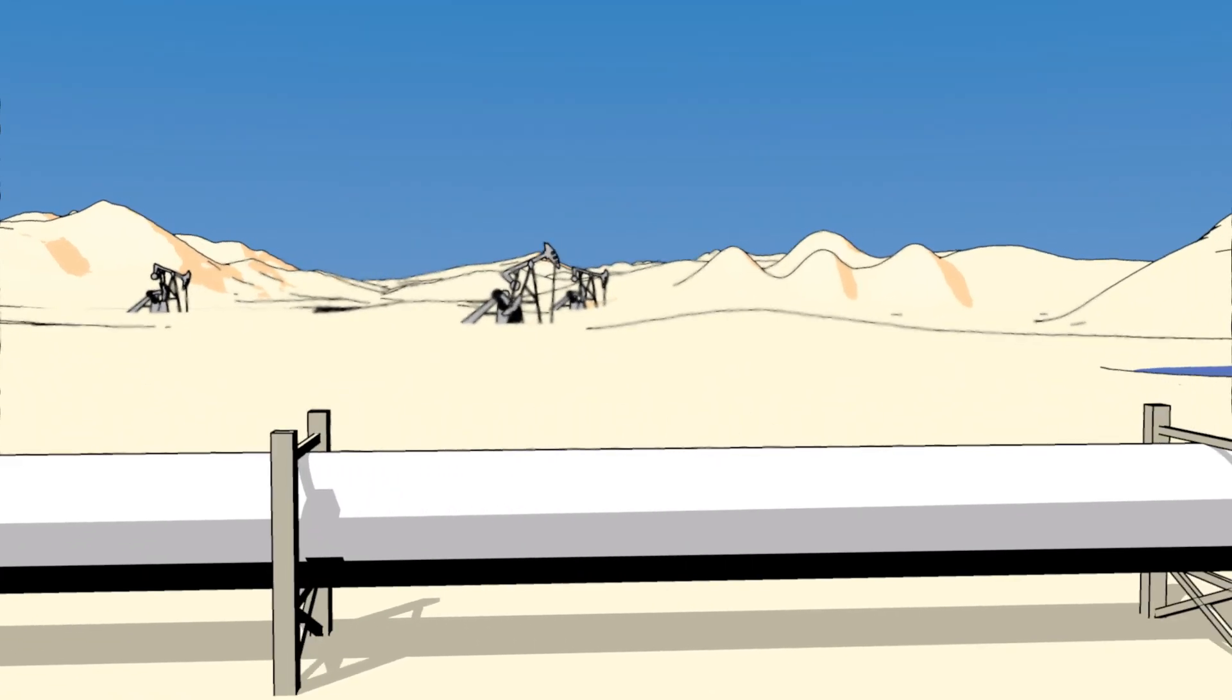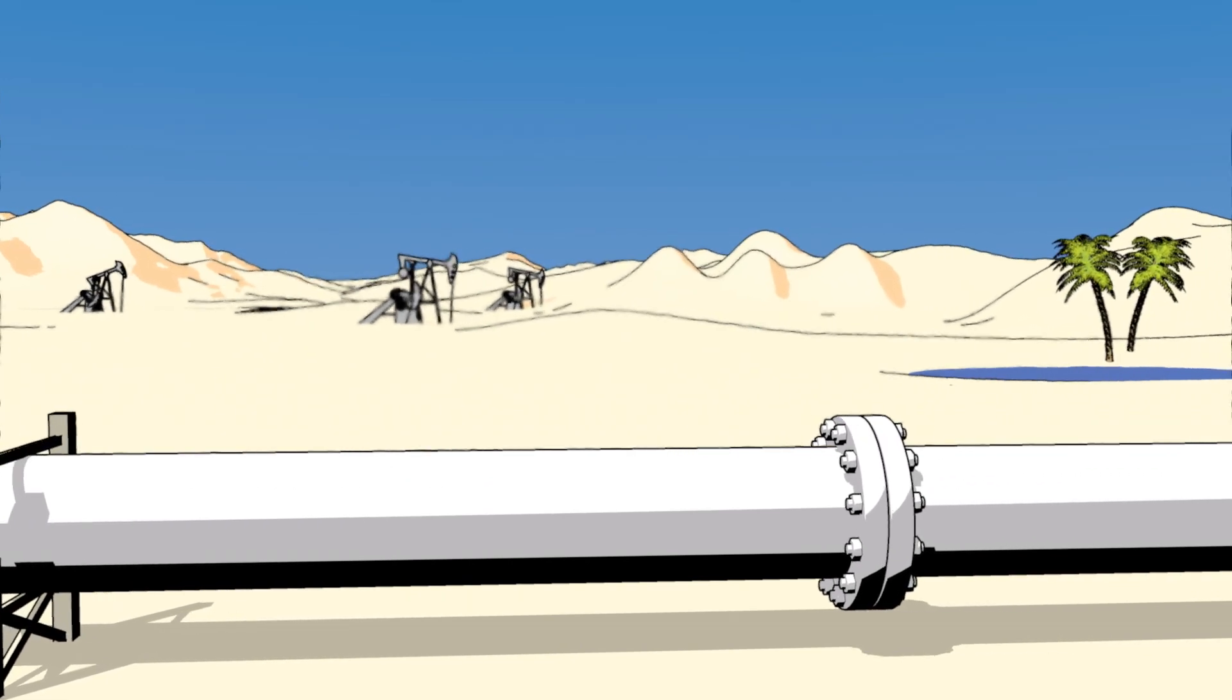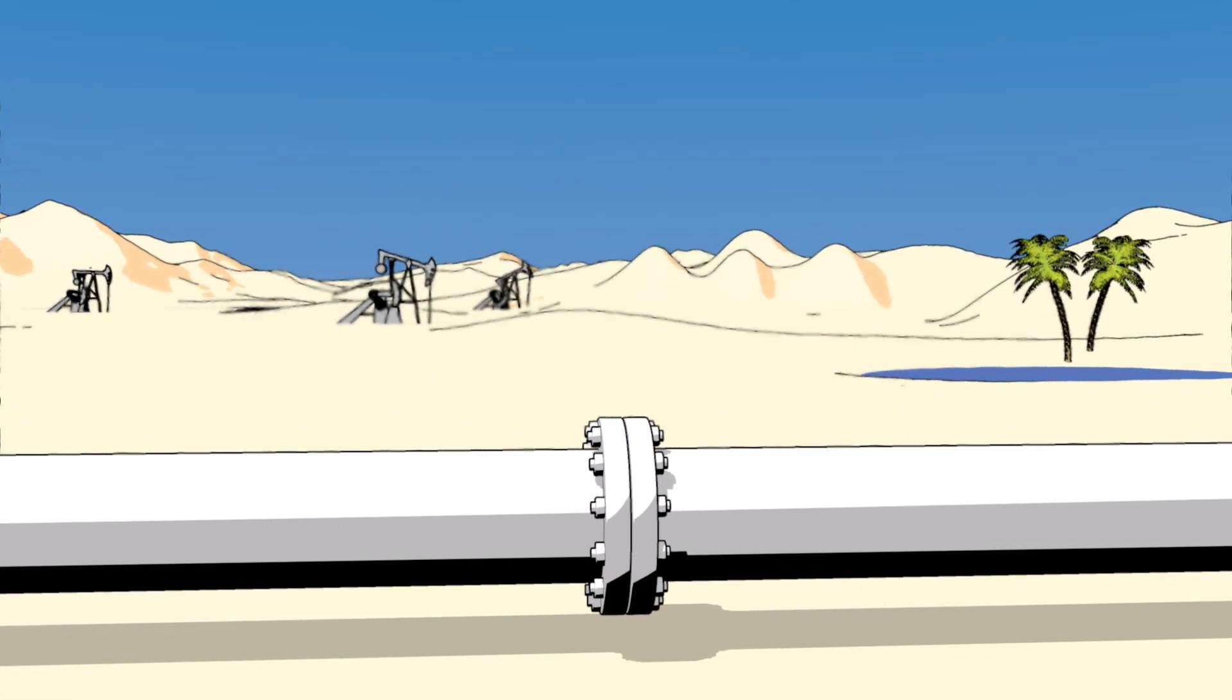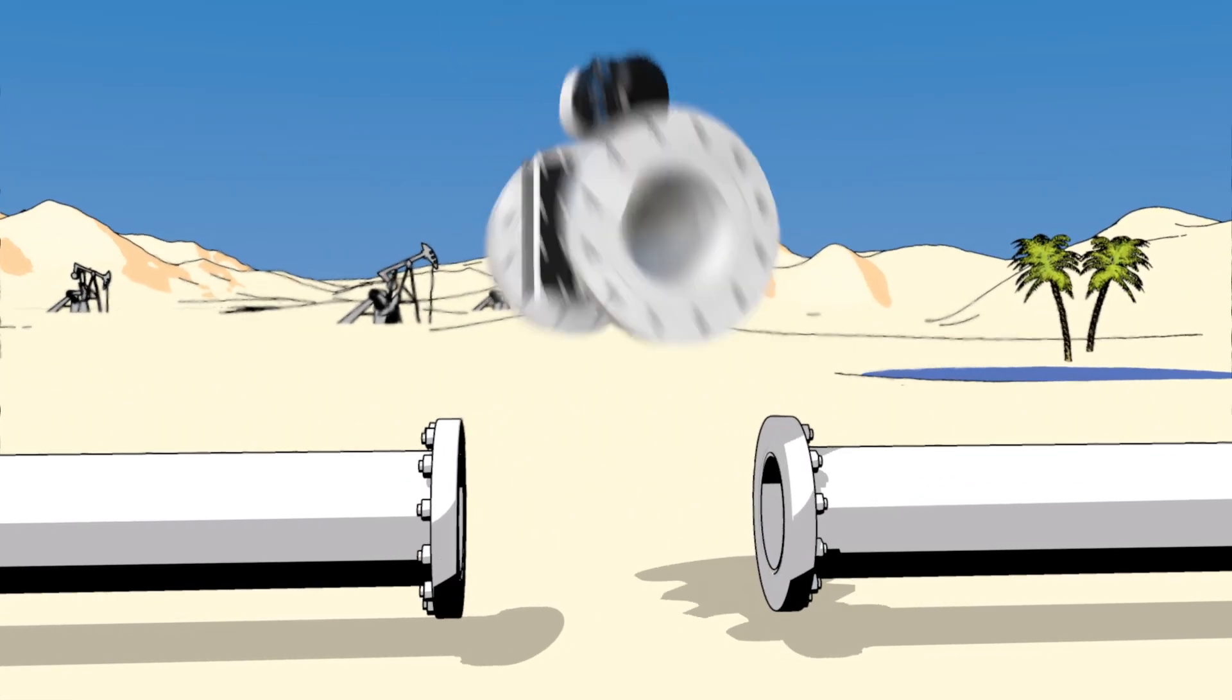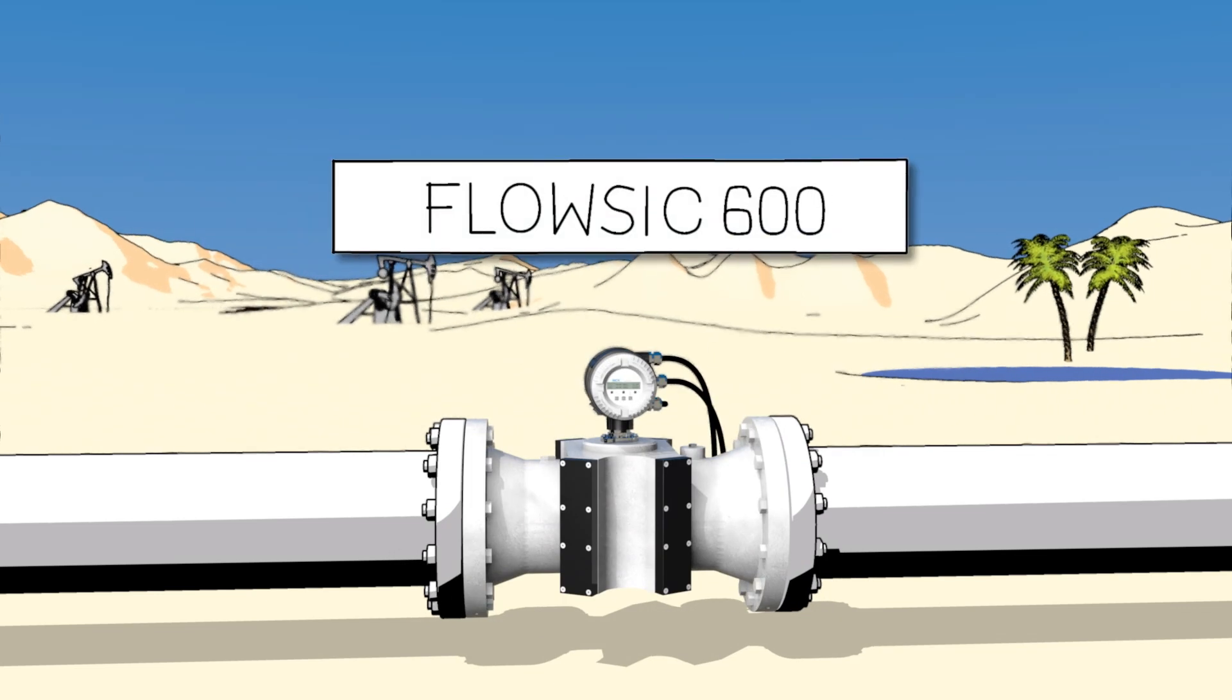Here, natural gas is transported. This is valuable. Therefore, it is imperative to know exactly what flows through the pipe. The Flozik 600 gas meter from SICK makes these important measurements.